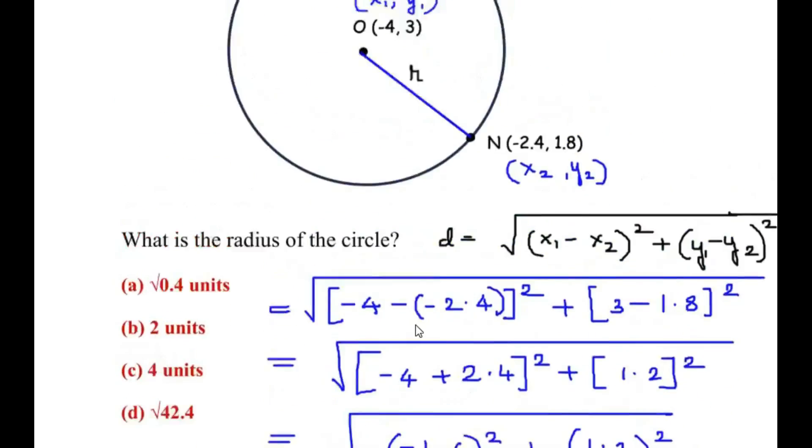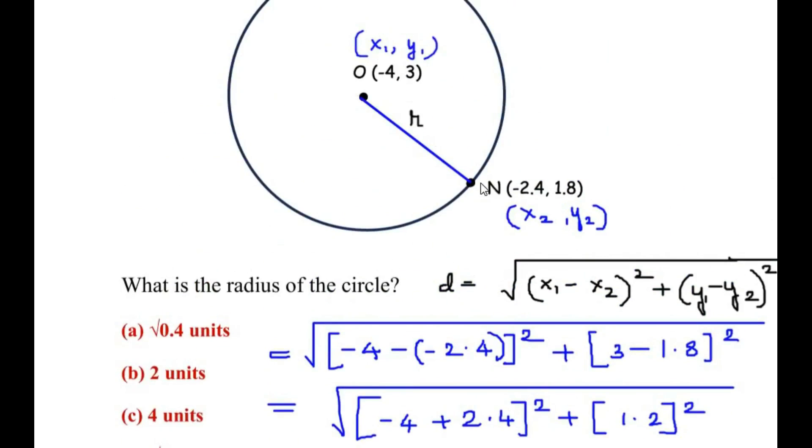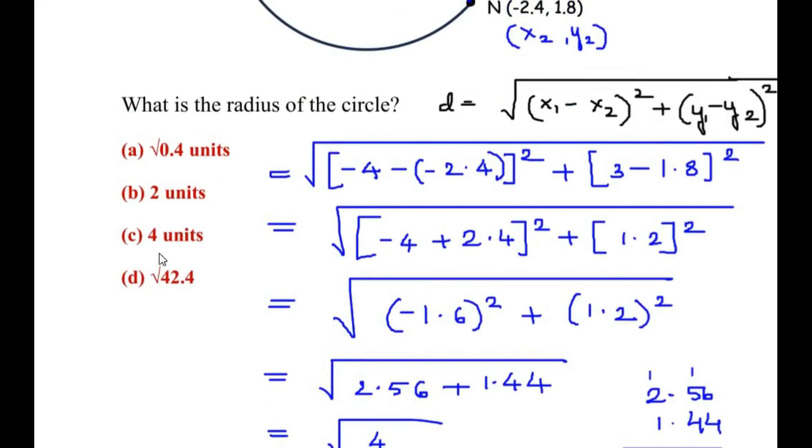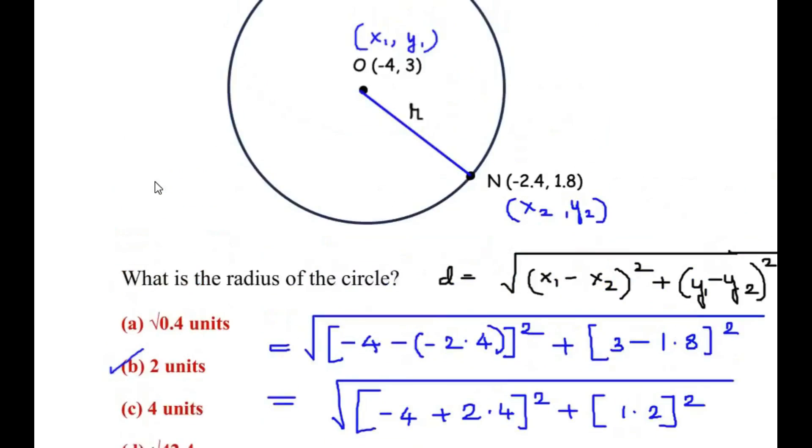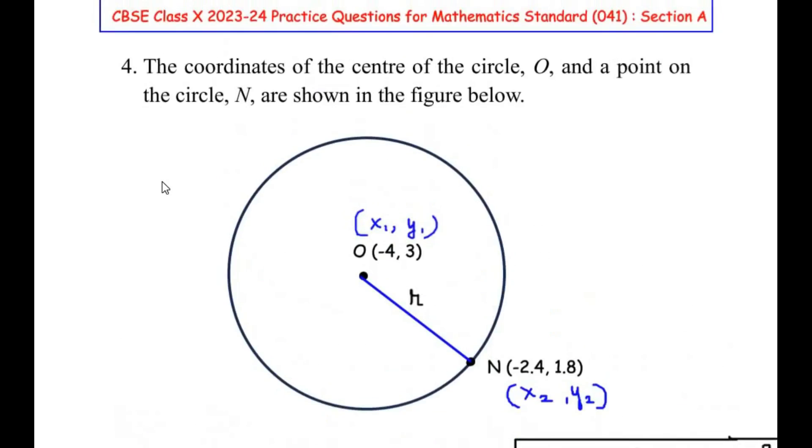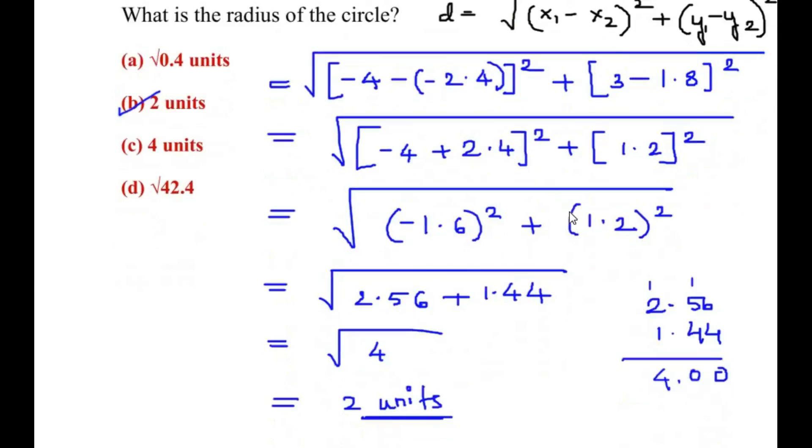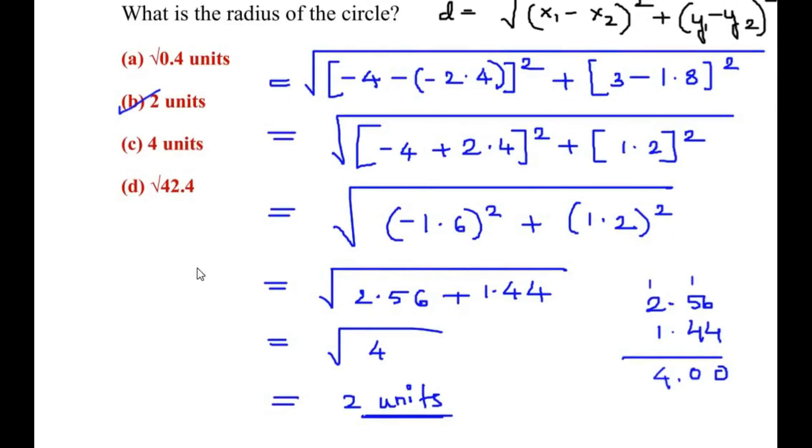So the distance which we got just now, that is the distance between point O and point N, is nothing but the radius. So here since we got the distance as 2 units, it means the radius of the circle is 2 units, which is your option B. I hope you have understood all the steps and like the video. If you're liking my videos, like, share, and subscribe to my channel. Thank you for watching.